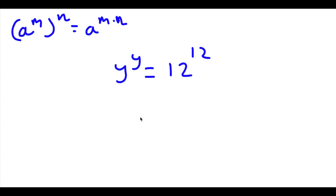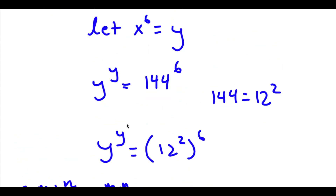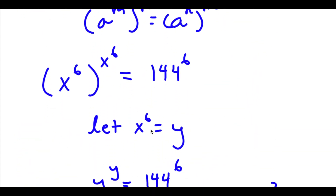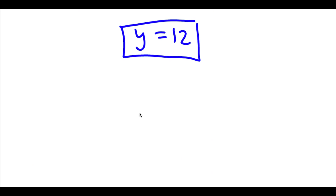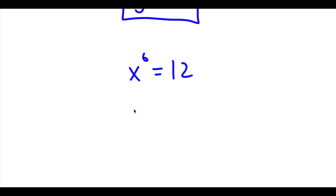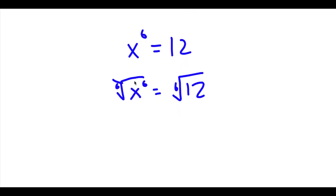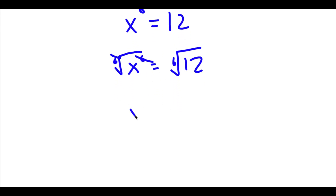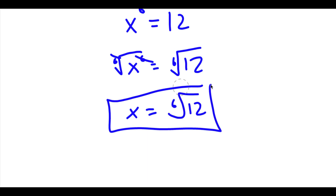So I have y to the power of y equals 12 to the power of 12, which means y is equal to 12. Since we let x to the power of 6 equal y, and we now know y equals 12, that means x to the power of 6 is equal to 12. To solve this, I'm going to take the 6th root on both sides, so x is equal to the 6th root of 12. That is our answer.